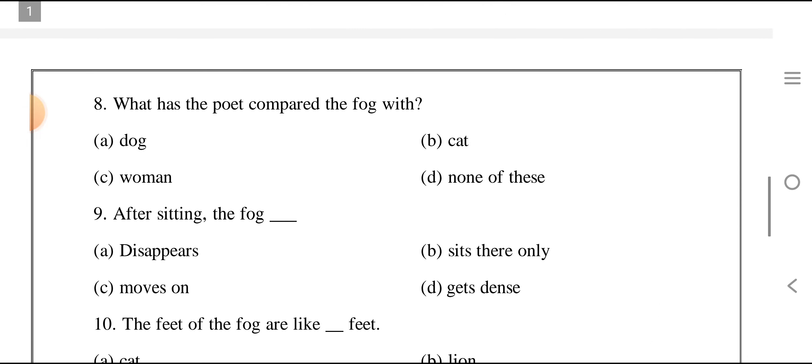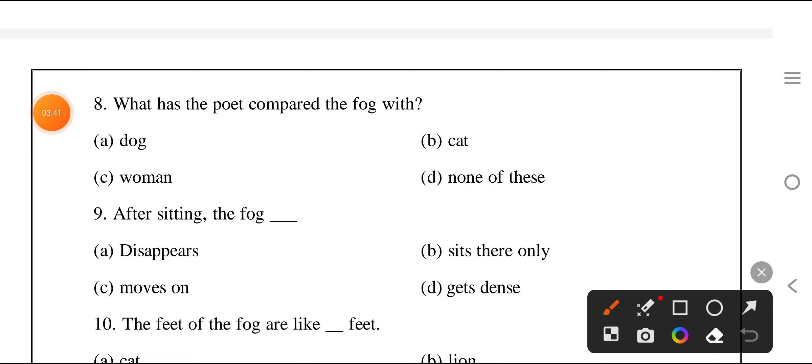What has the poet compared the fog with? Who compared the fog? Dog, cat, woman, none of this. When you read the first line, it is written in the second line: The fog comes on little cat feet. So it was from the cat.